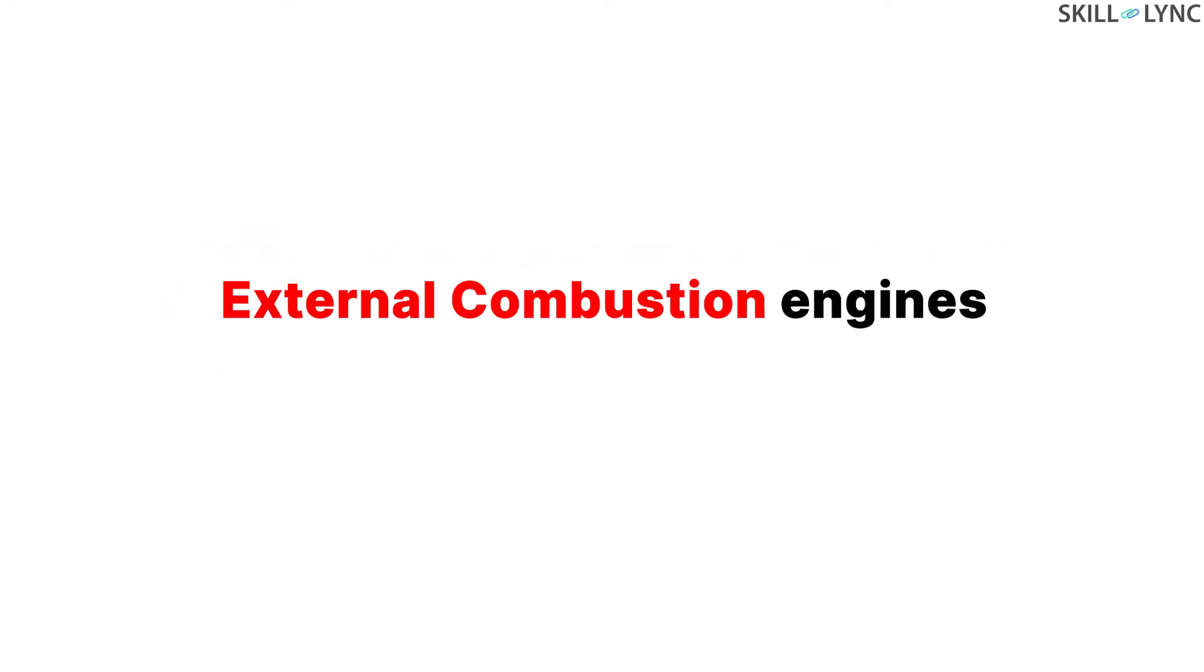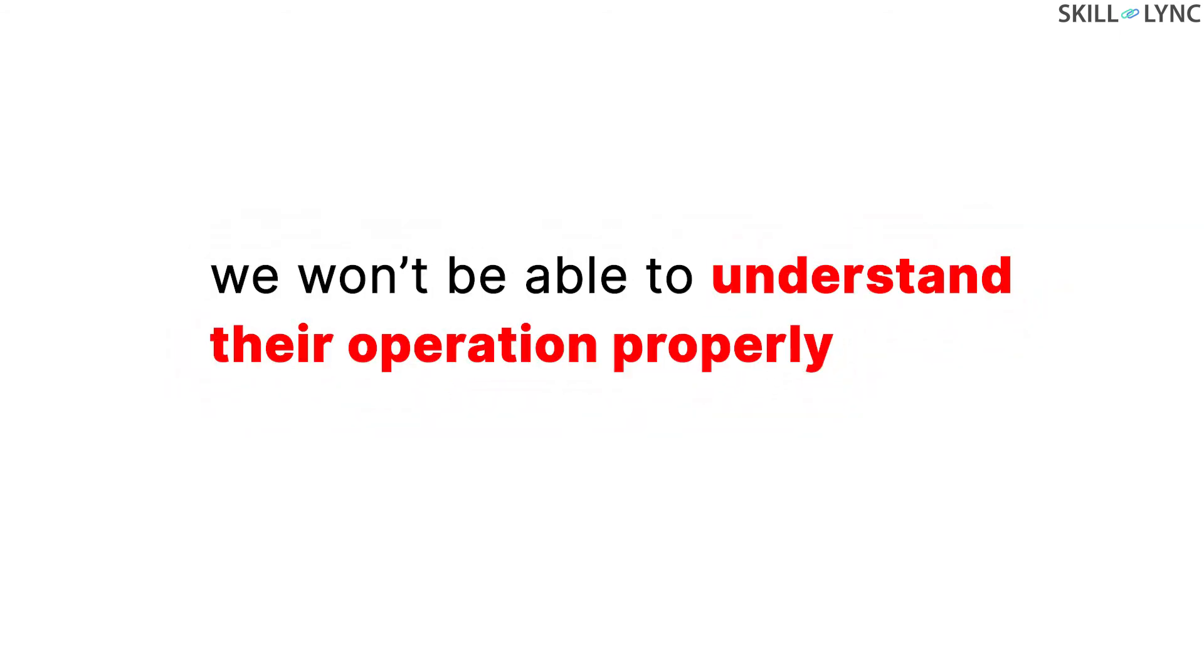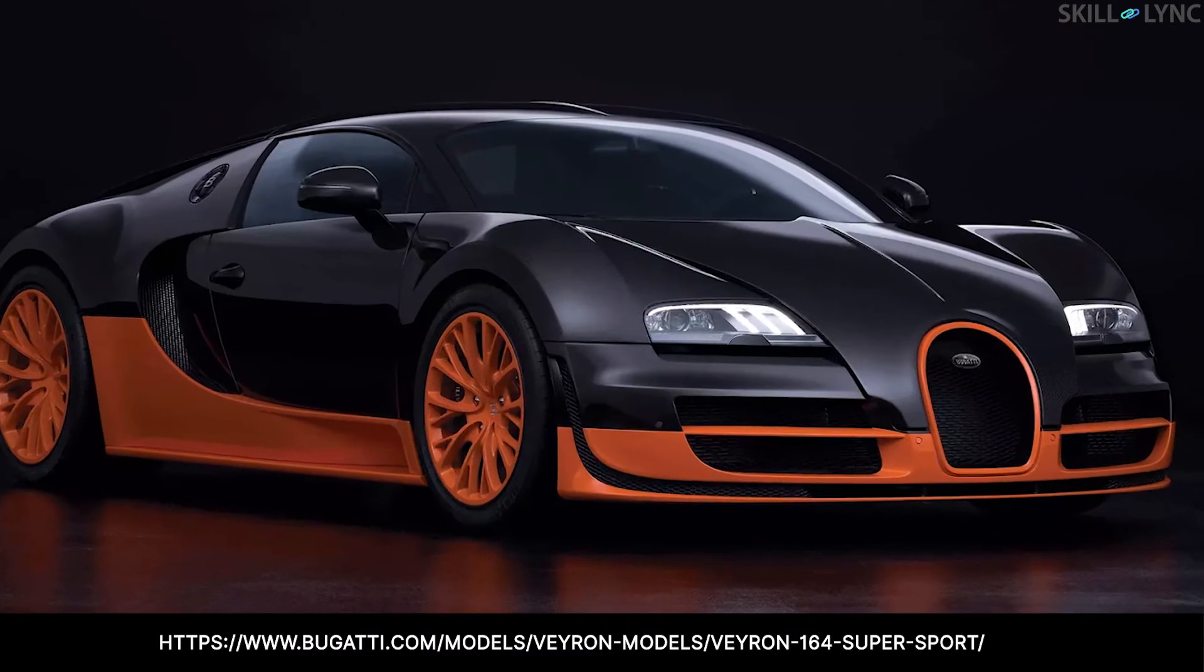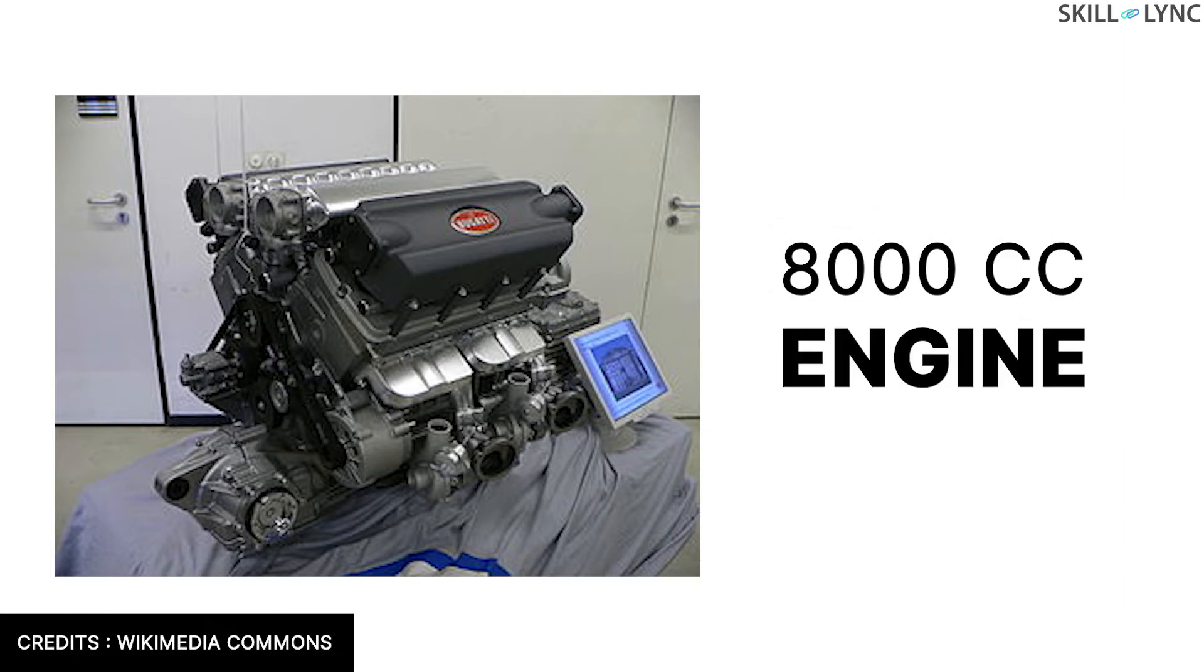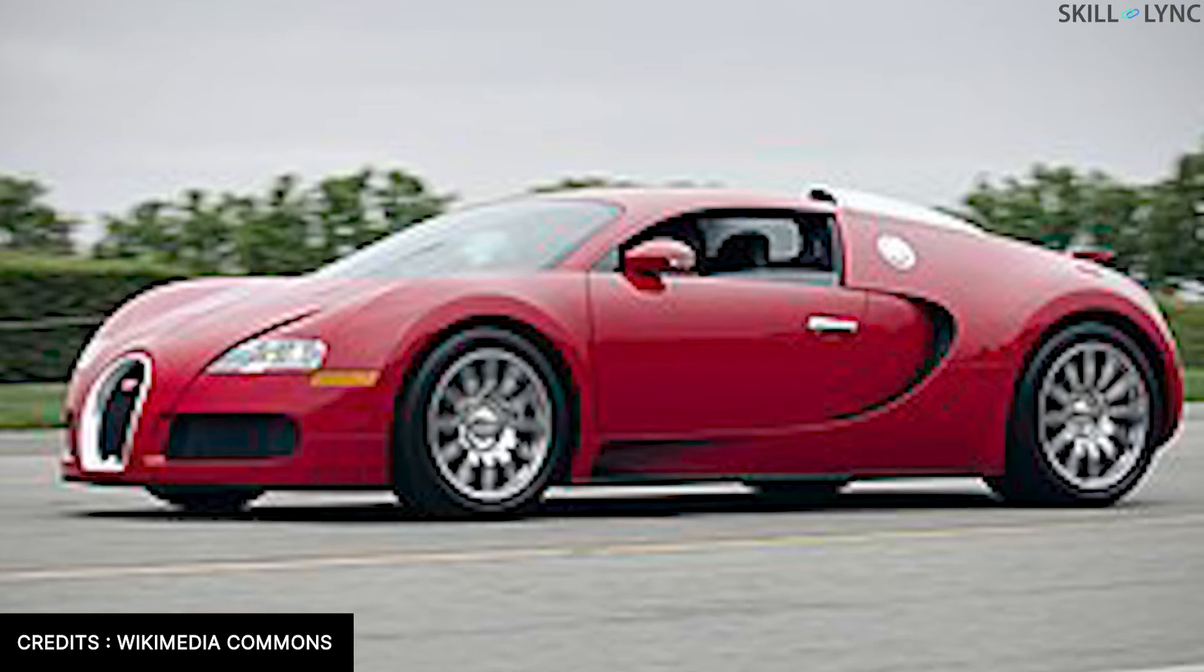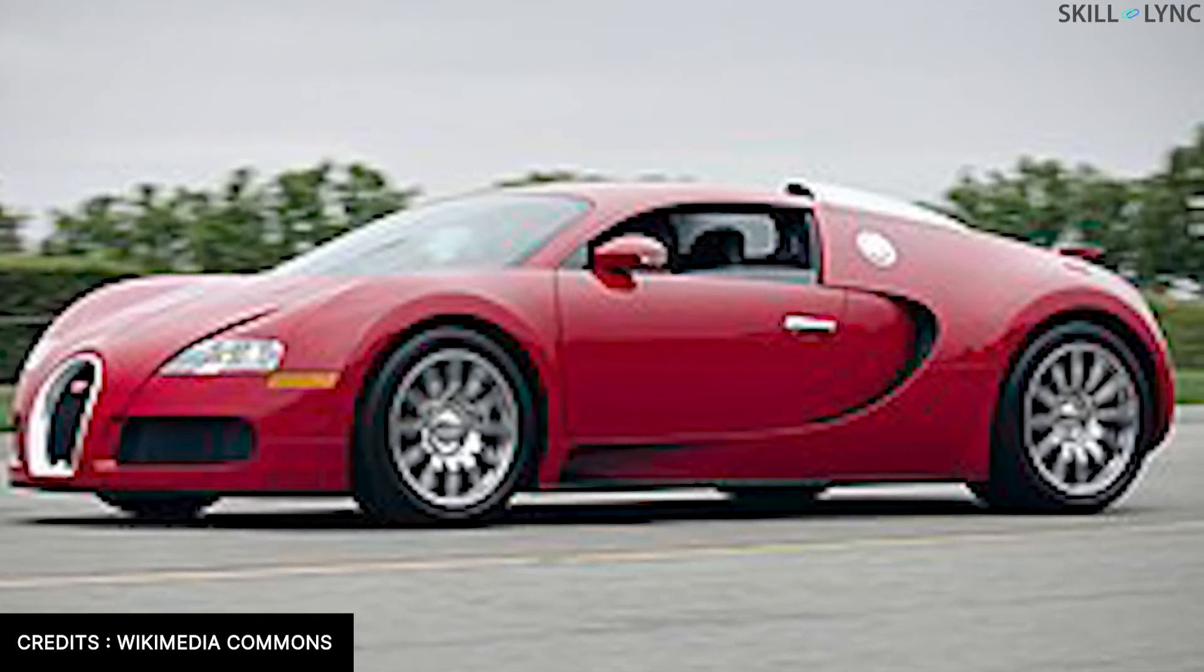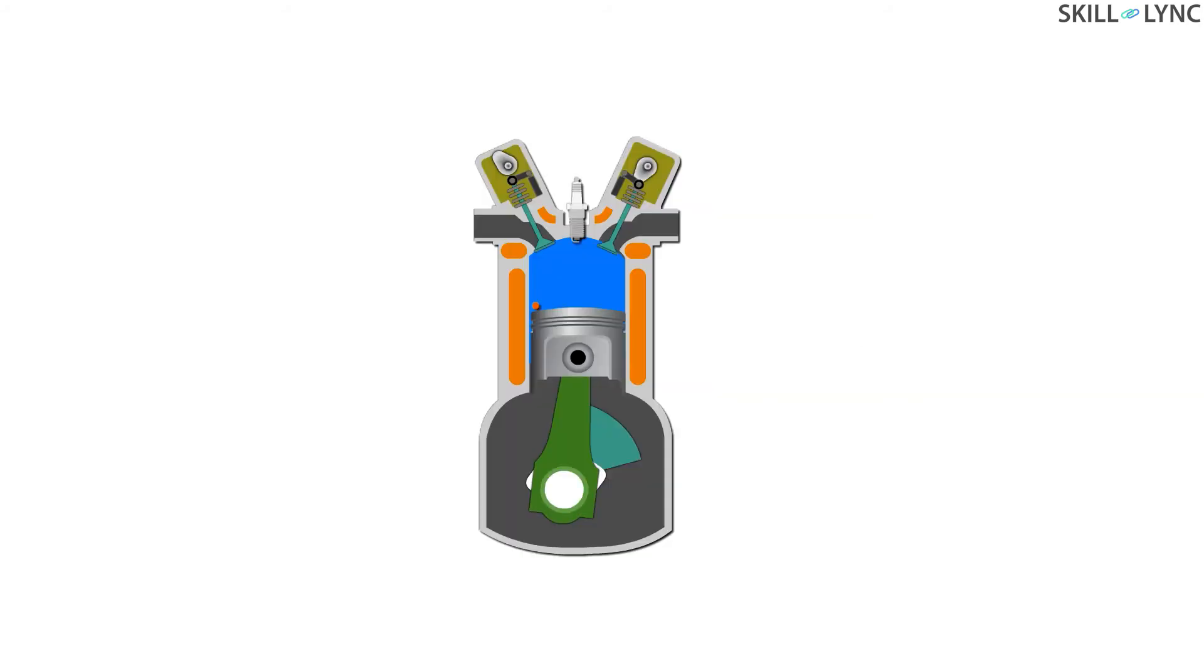Without knowing the terms associated with IC engines, we won't be able to understand their operation properly. You must have heard of the Bugatti Veyron, which is hailed as one of the fastest street legal cars ever made. Did you know that it has an 8,000 cc engine? What does it mean? To understand more about engines, we must understand the terms related to it. Hence, without further ado, let's start with the most basic terms: top dead center and bottom dead center.